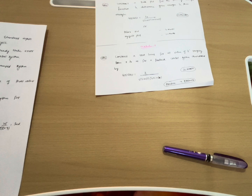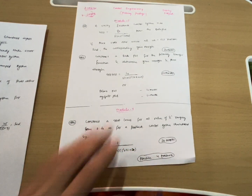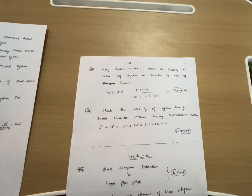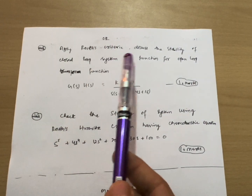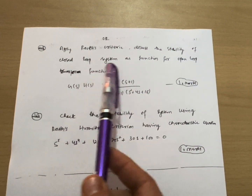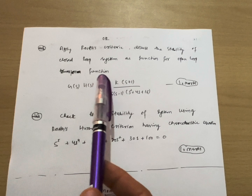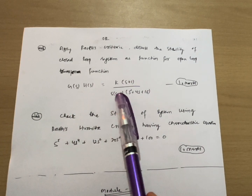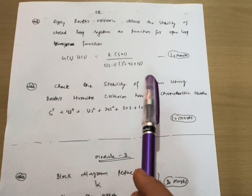Another portion of Module 4 is Routh's criteria. There will be a 10-marks question: 'Apply Routh's criteria and discuss the stability of the closed loop system for the open loop transfer function G(s)H(s) = K(s+1) / [s(s−1)(s²+4s+16)].' This is simpler than root locus.